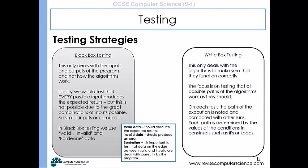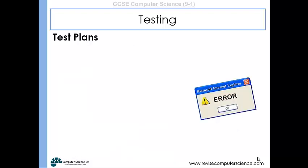So another strategy is white box testing. So this is where we don't worry about the inputs and we don't worry about the outputs of the program. All we worry about is making sure that the algorithm itself functions correctly. So we focus on making sure that all possible paths of the algorithm work as they were intended to. So on each test, the path of the execution is noted and compared with other runs. Each path is determined by the values of the conditions in constructs, such as selection and iteration.